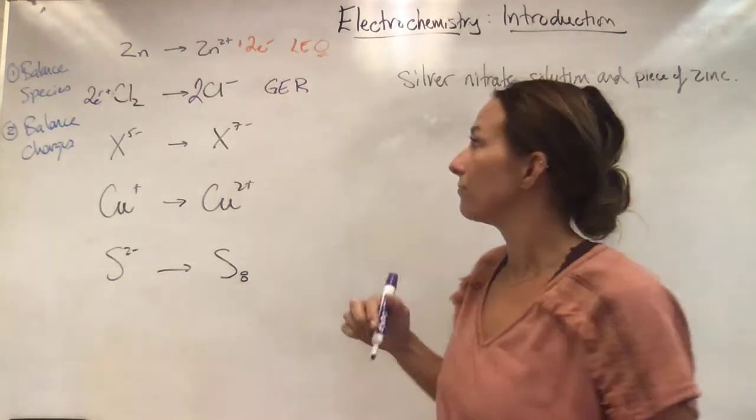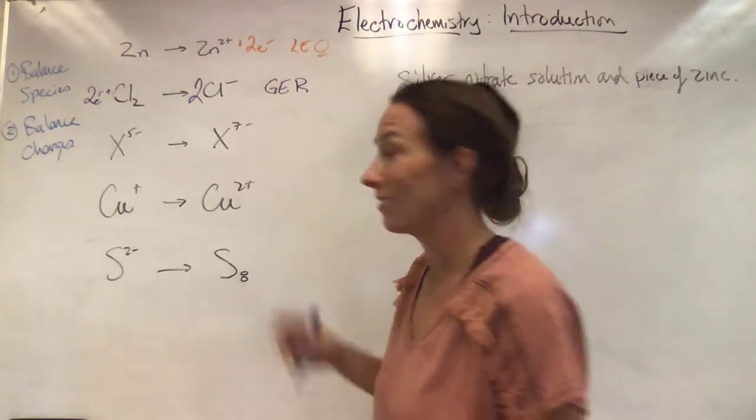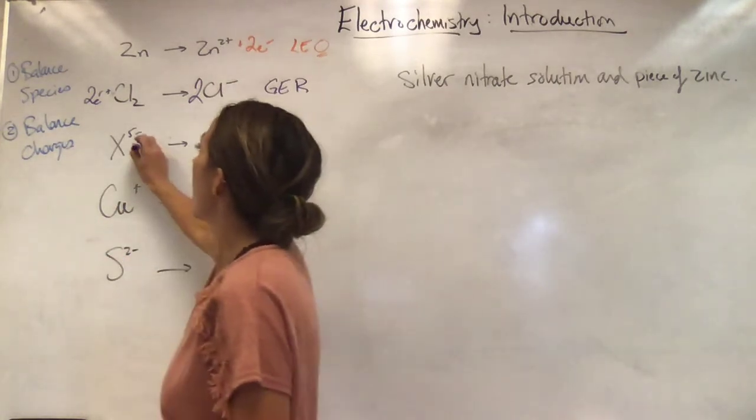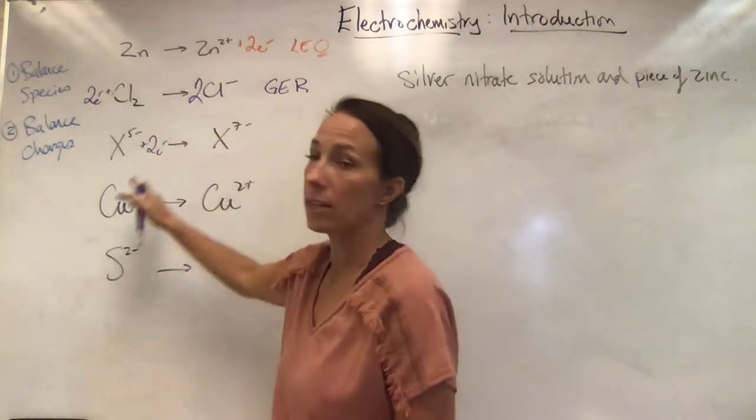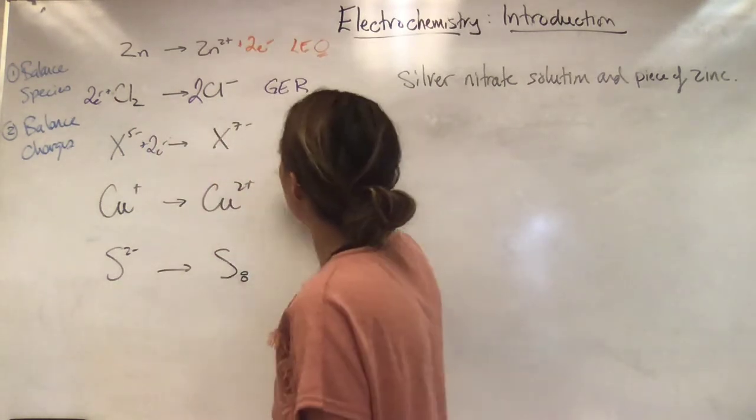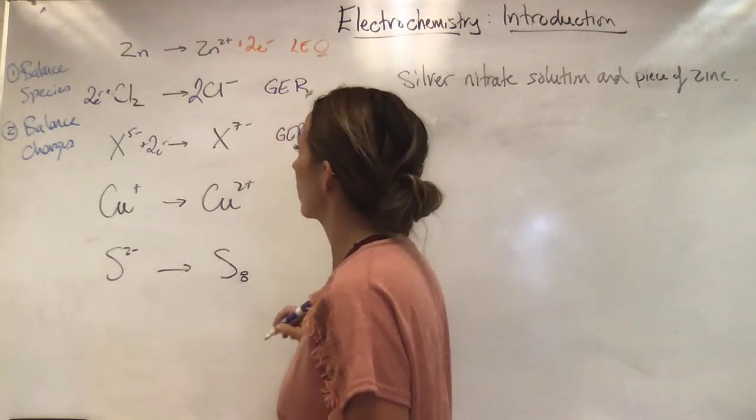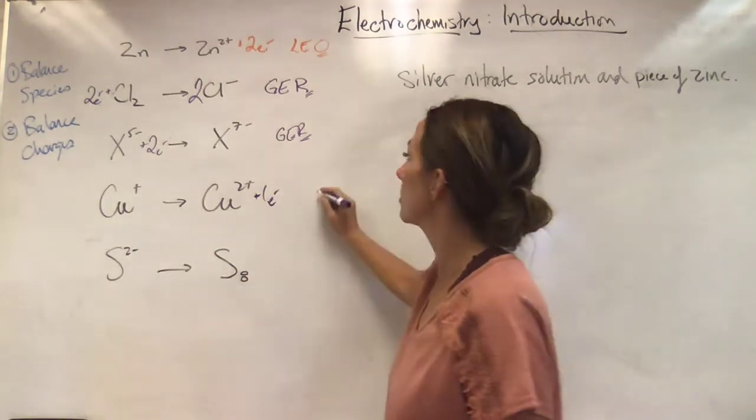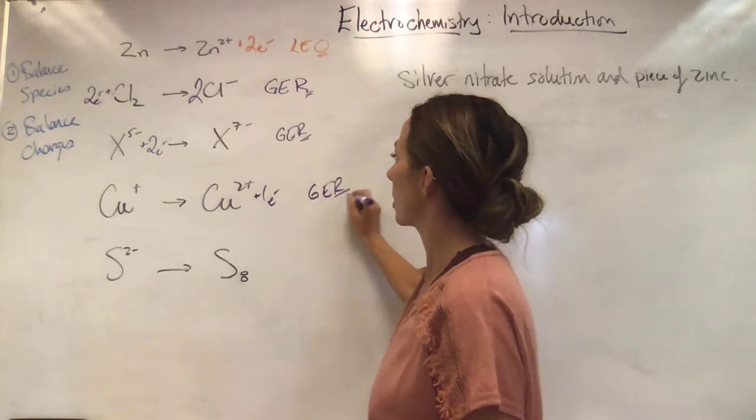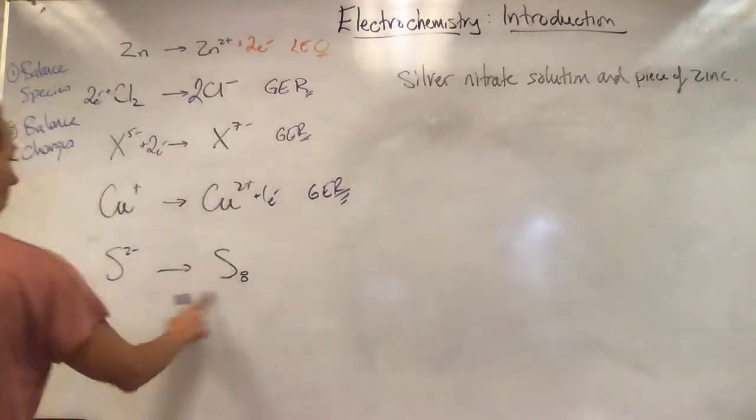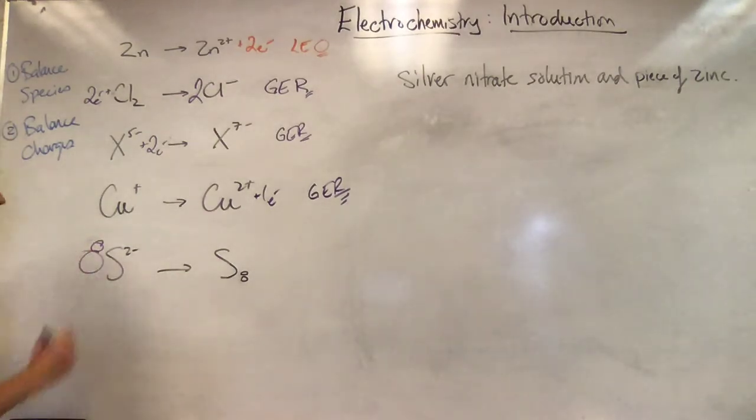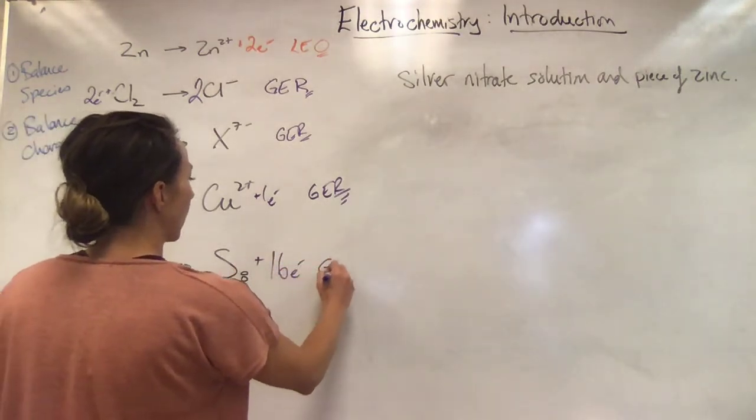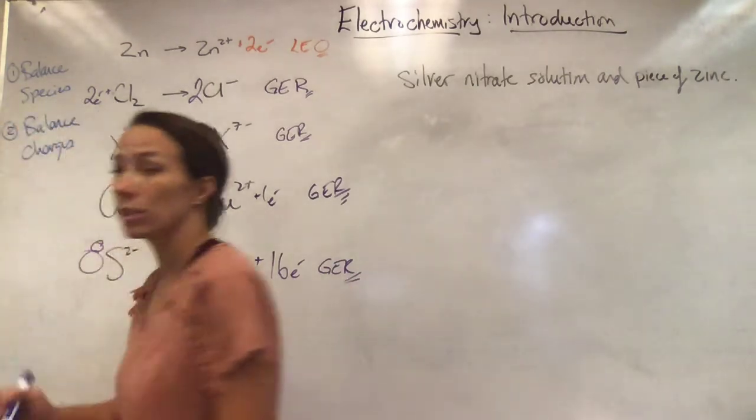Those are two very similar to what we just did. Here these are a little bit more complicated. I've got a seven minus and a five minus to play around with. I'm going to have to add two negatives to that side to make seven minus and seven minus. Now the left-hand side equals the right-hand side. I must have gained electrons, so this is a reduction half reaction. The one plus, two plus, if I add an electron to this side, it's one plus and one plus. Gain of electrons, a reduction half reaction. Here I want to balance my species, so I'm going to put eight for my sulfurs there. Then I have a 16 negative here and nothing negative there, so I'm going to add 16 electrons there. Gain of electrons is reduction, a reduction half reaction.